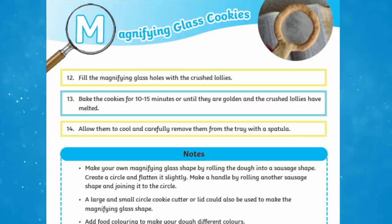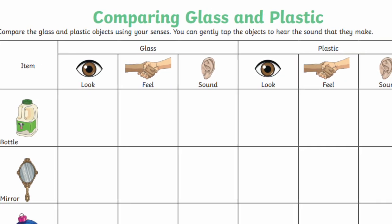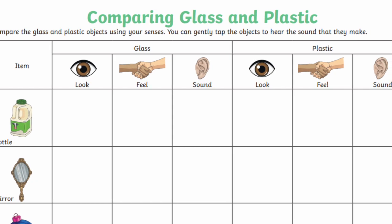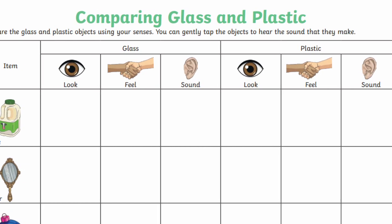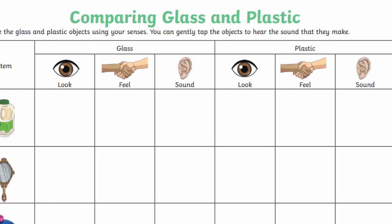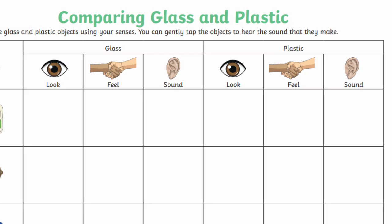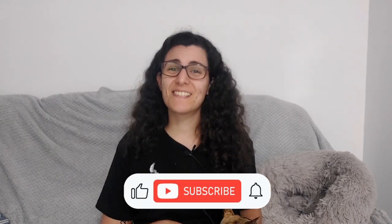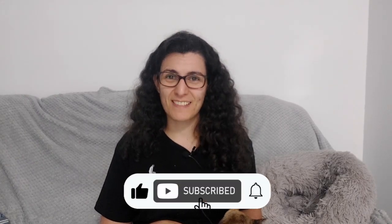There's also a comparison activity that encourages children to identify the differences between glass and plastic. This is a fun and tactile way for children to use their senses and think about the properties of this material. I hope you enjoyed the science activities for kids around the theme of glass.